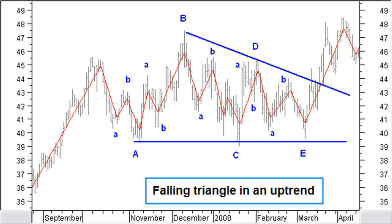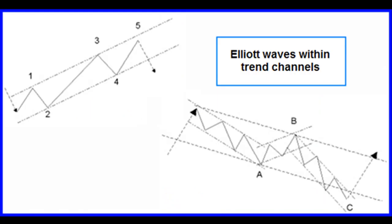Trend channels are an important tool to see which waves belong together, and they can be used to project price targets. Trend channels are parallel lines that capture the price move of a wave pattern. Most of the time Elliott waves of the same order can be isolated using trend channels — this is the case for impulse waves, zigzag correction waves, and triangles. If these patterns are not moving within a trend channel, it is likely that the Elliott count is wrong.